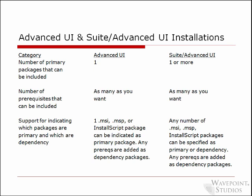Regarding support for indicating which packages are primary and which are dependency: in Advanced UI projects, you can have one MSI, MSP, or InstallScript package indicated as the primary package, and any prerequisites added are dependency packages. With a Suite Advanced UI project, you can have any number of MSI, MSP, and InstallScript packages specified as primary or dependency, and any prerequisites are added as dependency packages.